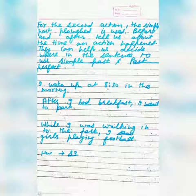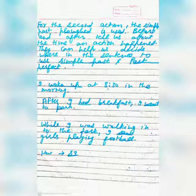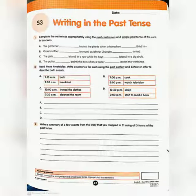Can you describe a few things you did yesterday morning using all three forms of the past tense? For example: I woke up at 8:30 in the morning — simple past tense used: woke. After I had breakfast, I went to the park. While I was walking into the park, I saw a few girls playing football. So, take out your worksheet at piece number 47: writing in the past tense.